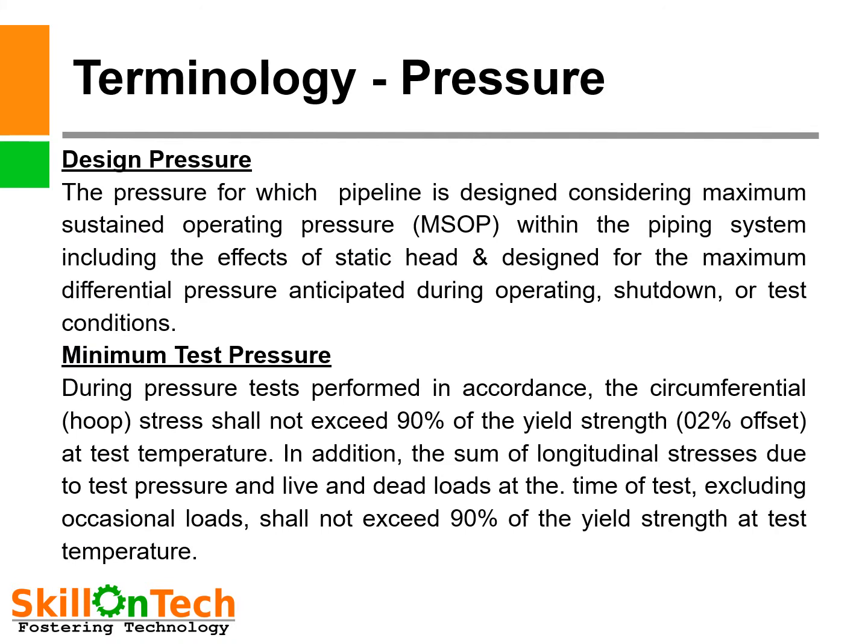What is the terminology used for hydrostatic test as per code? Design pressure is the pressure for which the pipeline is designed, considering maximum sustained operating pressure within the piping system including the effect of static head, and designed for the maximum differential pressure anticipated during operating, shutdown, or test conditions. During a pressure test, the circumferential hoop stress shall not exceed 90% of the yield strength at 2% offset at test temperature.